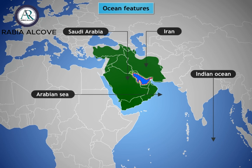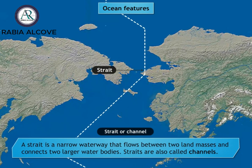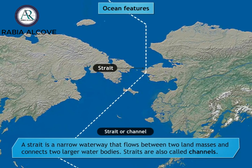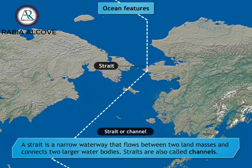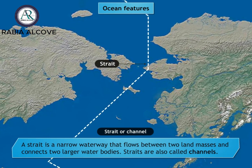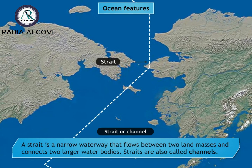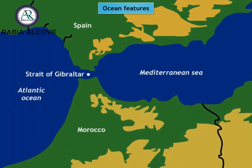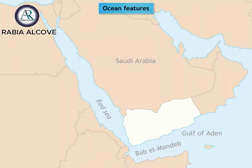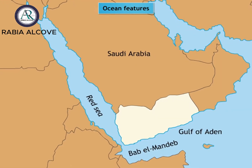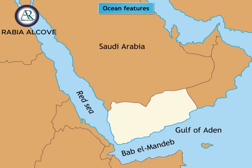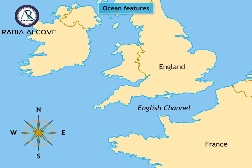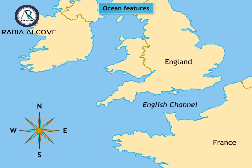A strait is a narrow waterway that flows between two land masses and connects two larger water bodies. Straits are also called channels. The Strait of Gibraltar enables water to flow between the Atlantic Ocean and Mediterranean Sea. The Bab-el-Mandeb Strait connects the Gulf of Aden and the Red Sea. The English Channel between England and France is also a strait.